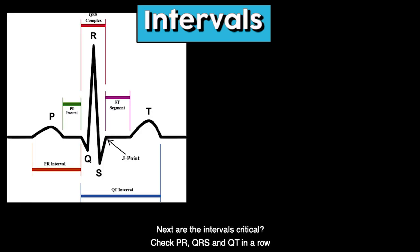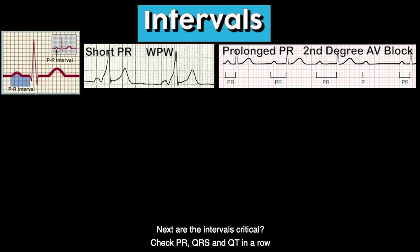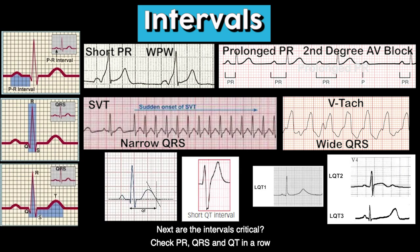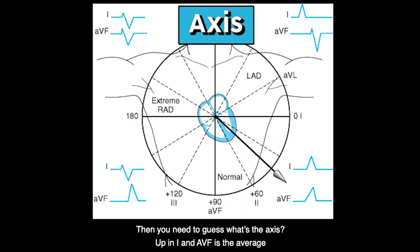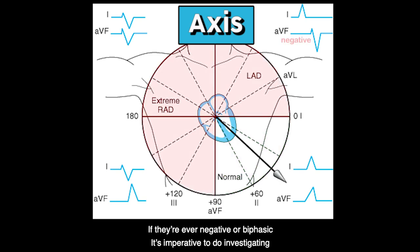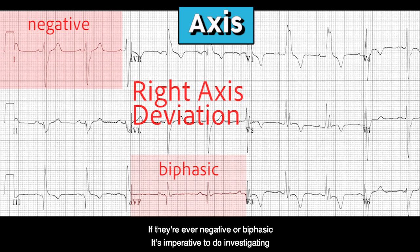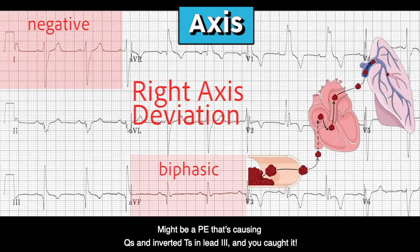Next all the intervals critical — check PR, QRS, and QT in a row. Then you need to guess what's the axis? Up in 1 in AVF is the average. If they're ever negative or biphasic, it's imperative to do investigating. Might be a PE that's causing cues in inverted T's in lead 3, and you caught it.